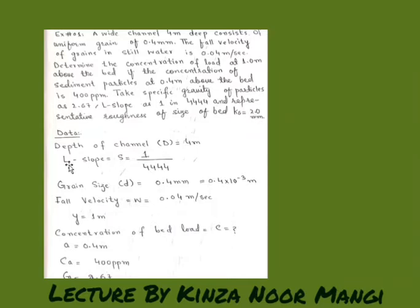Let's solve it. Collecting the data: depth of channel L equals 4 meter, slope S equals 1 by 4444, grain size d equals 0.4 millimeter, fall velocity W equals 0.04 meter per second. Y is the depth at which we have to find the unknown concentration C. Ca is the reference depth at which the concentration is given, and G is the specific gravity.